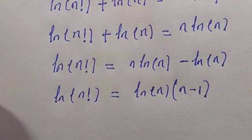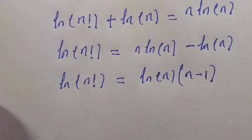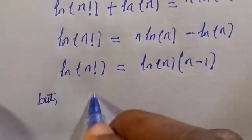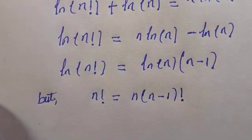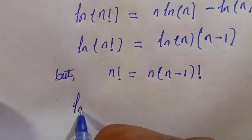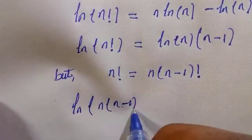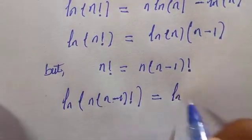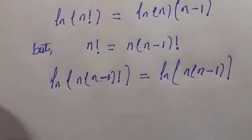From the basic rules of factorial, n factorial can be written as n times (n minus 1) factorial. Replacing this above gives us: ln of n(n minus 1) factorial equals ln of n(n minus 1).